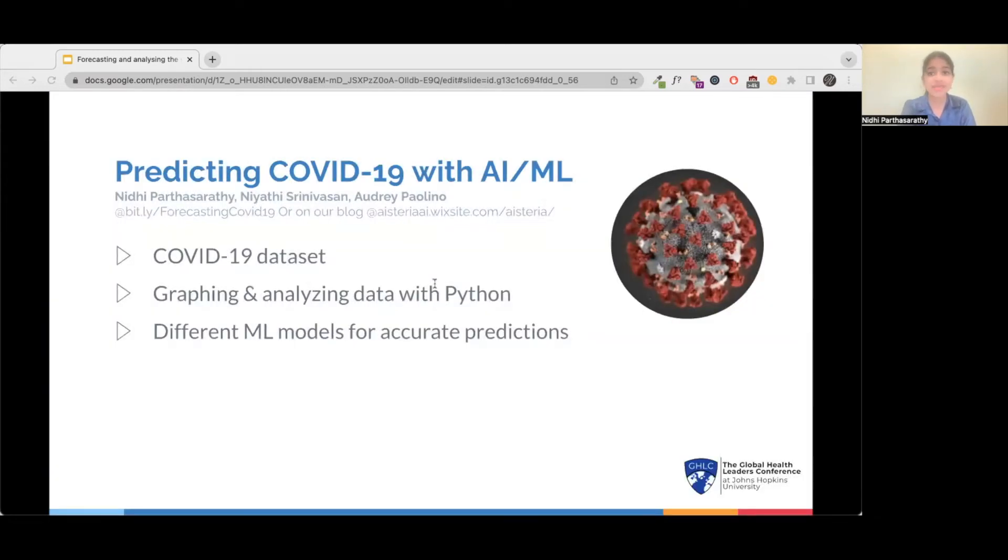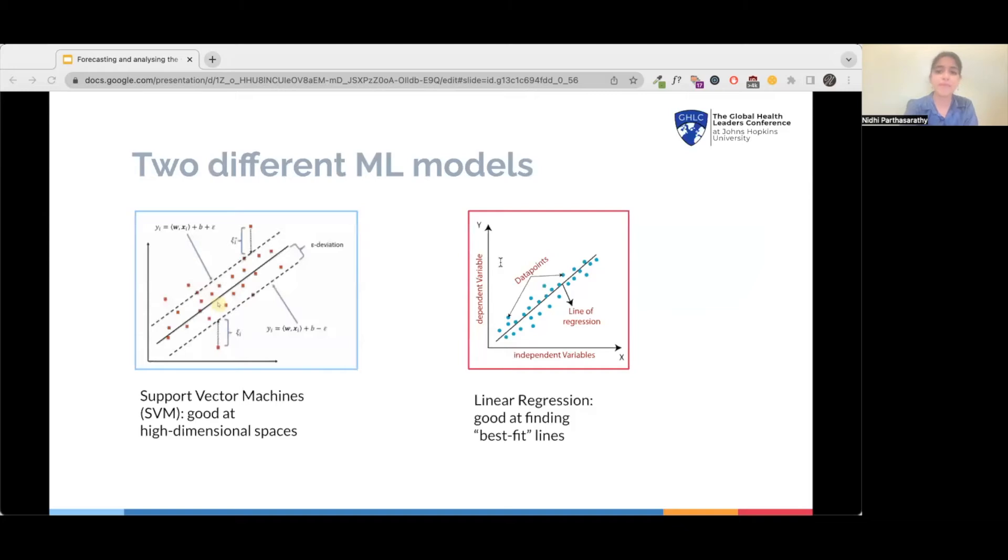I'd like to talk about a project I recently did in this area with two of my collaborators. There were three main parts of our project. The most important part of any model is the dataset. Our dataset had the deaths, recoveries, and cases for COVID from January 2020 to April 2022. The second part of our project was graphing and analyzing this data with Python. And the last part of our project was trying out a variety of different models to get accurate predictions and many different insights.